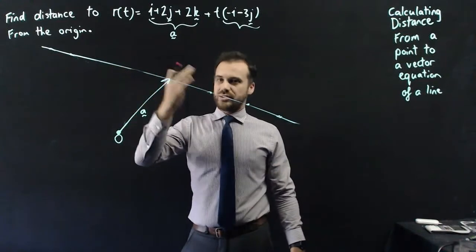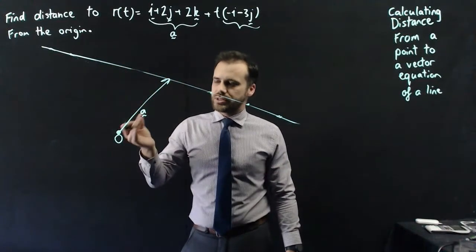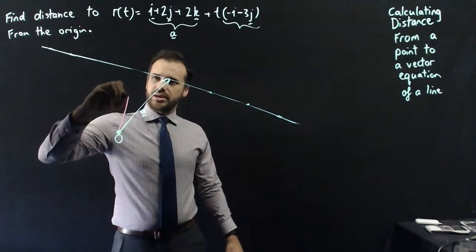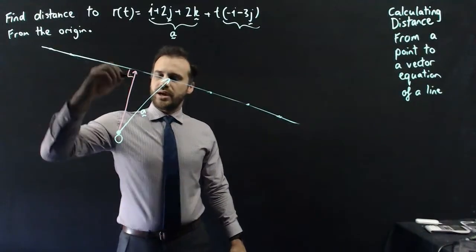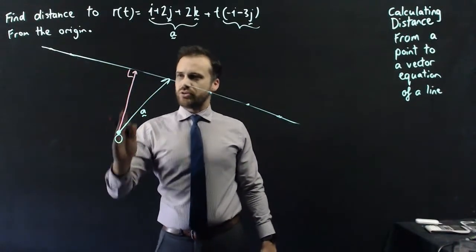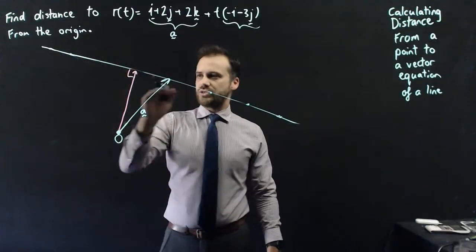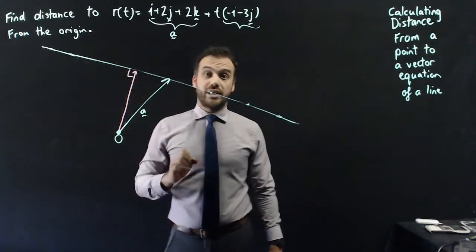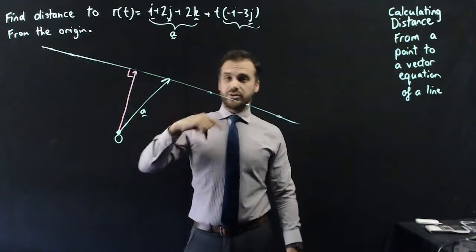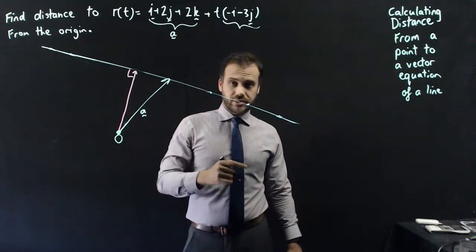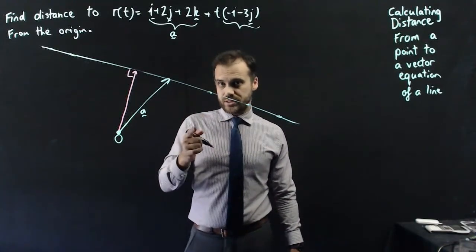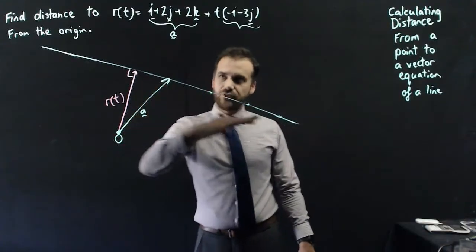It's implied that that's the shortest distance. The shortest distance is the one where the vector from the origin to the vector equation has a right angle. You should immediately think: vectors, right angles, dot products. And so what we need are two vectors.